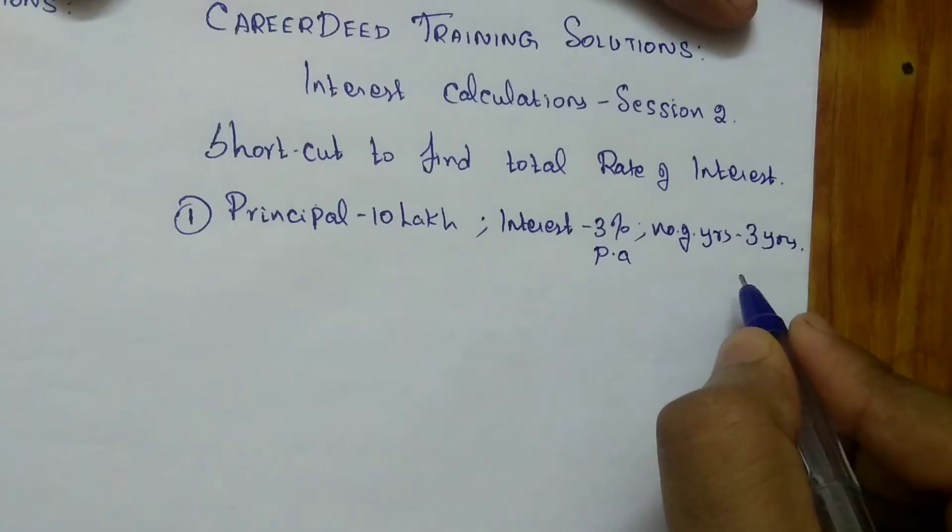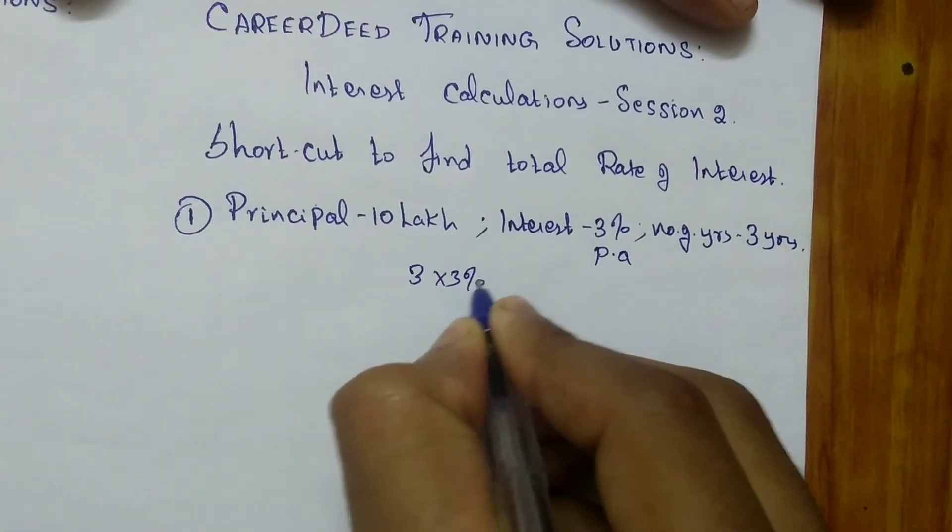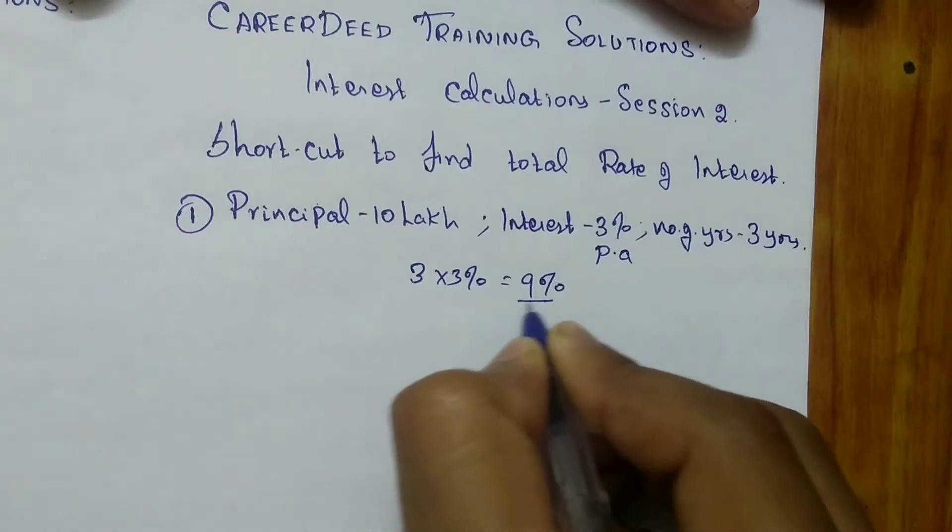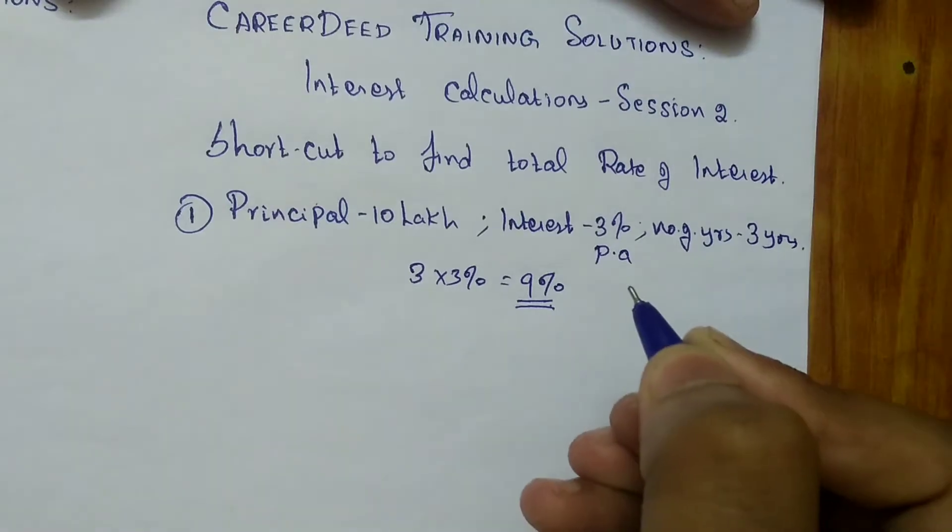So 3% per annum means for 1 year you have to pay 3%. For 3 years, you have to pay 3 times 3%. So 3 times 3% gives you 9% as the overall interest at the end of 3 years. So 9% of 10 lakh is 90,000 rupees.